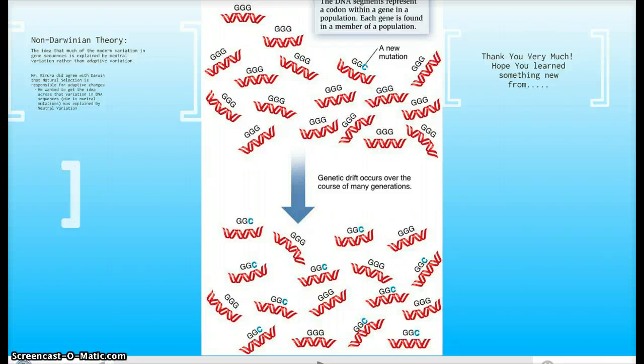As you learned from last semester, remember that the last nucleotide does not make a difference in the resulting protein that's later transcribed. So genetic drift occurs.